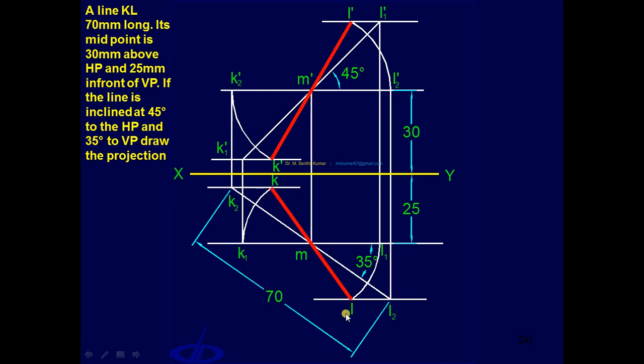Draw line joining KL, that is nothing but the final top view. As a final check, draw projector through K dash, it must pass through K. Projector through L dash, it must pass through L.